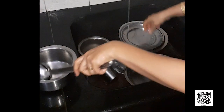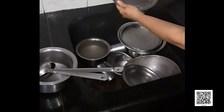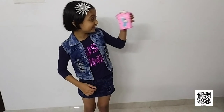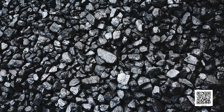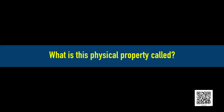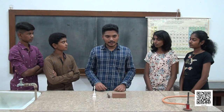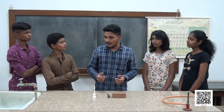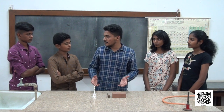We hear a unique sound while washing utensils, clinking a piggy bank containing coins, or when a metal plate or coin falls on the ground. Whereas coal will not produce any sound on falling. What is this physical property called? Here is an activity very familiar to you — making sounds using these substances.